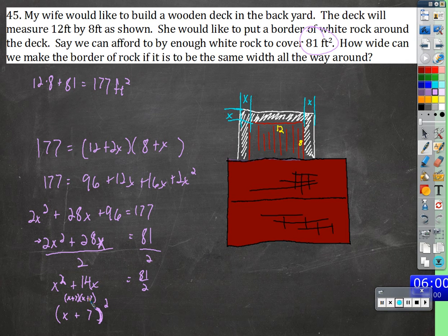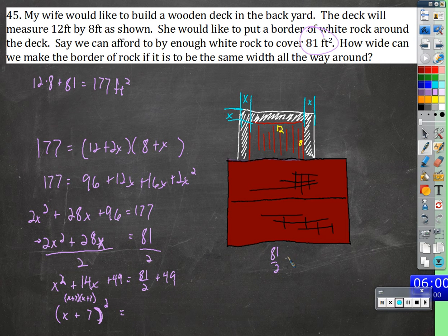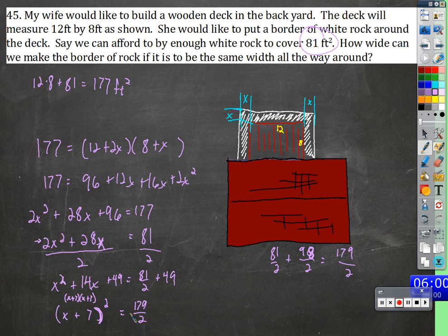The only way for that to happen is to have a 7 and a 7. When we multiply it all out, we get 7 times 7 equals 49. So we're going to have to add 49 to both sides. On the right side, 81 halves plus 98 halves gives 179 over 2. Now we take the square root of both sides, and we have x plus 7 equals plus or minus the square root of 179 over 2. Subtracting 7 from both sides, we get x equals negative 7 plus or minus the square root of 179 over 2.